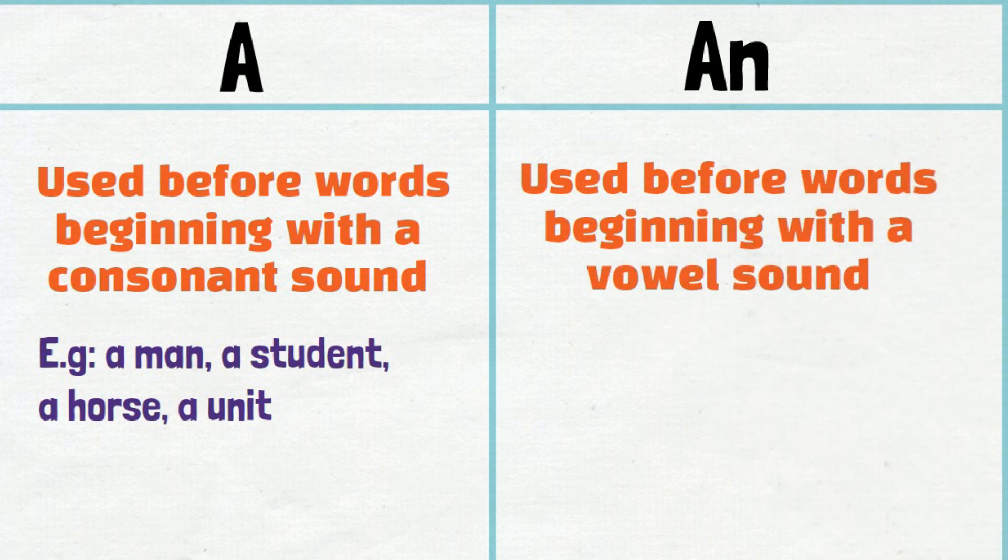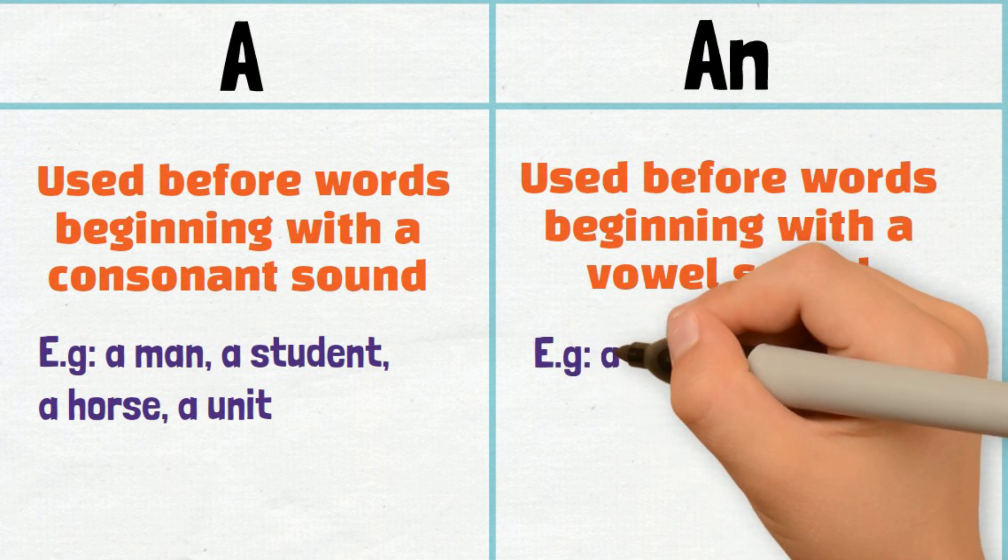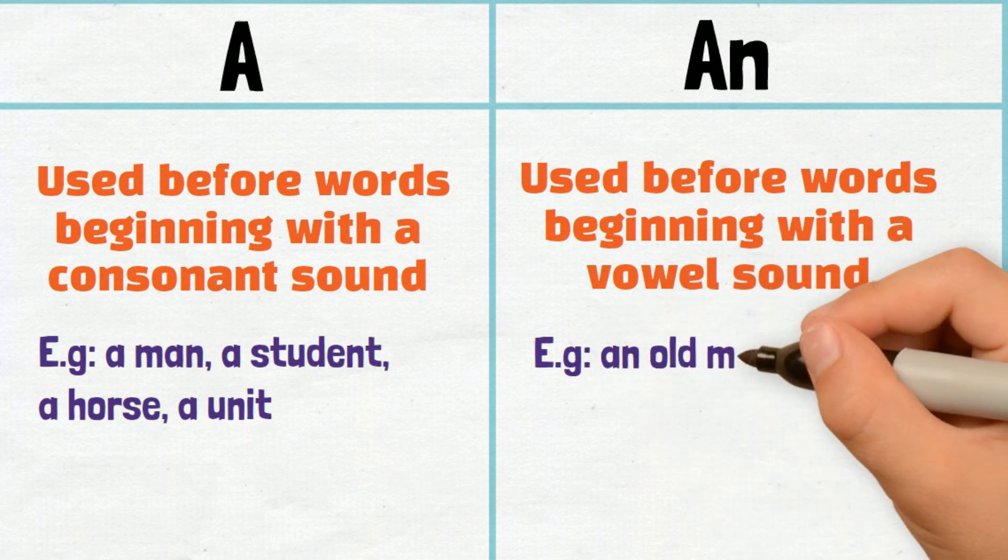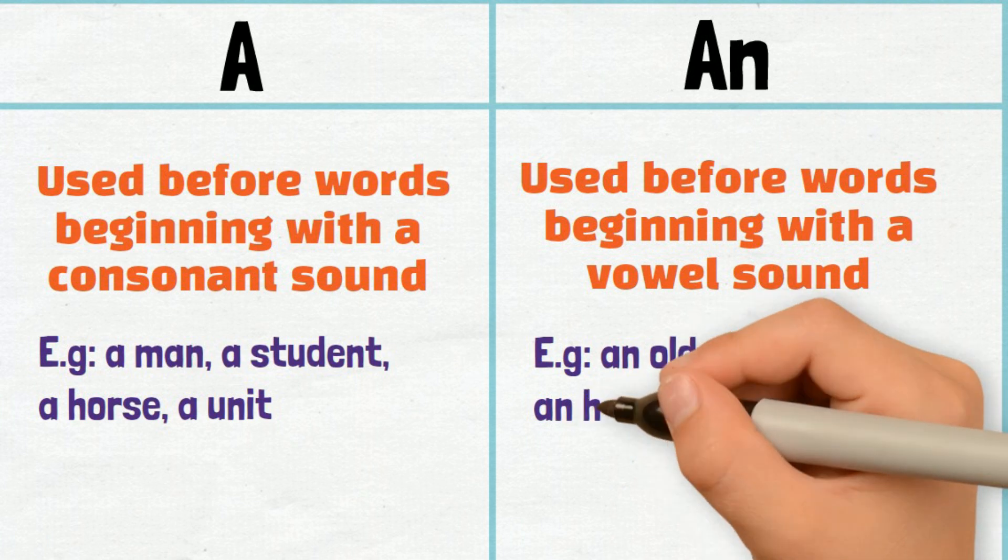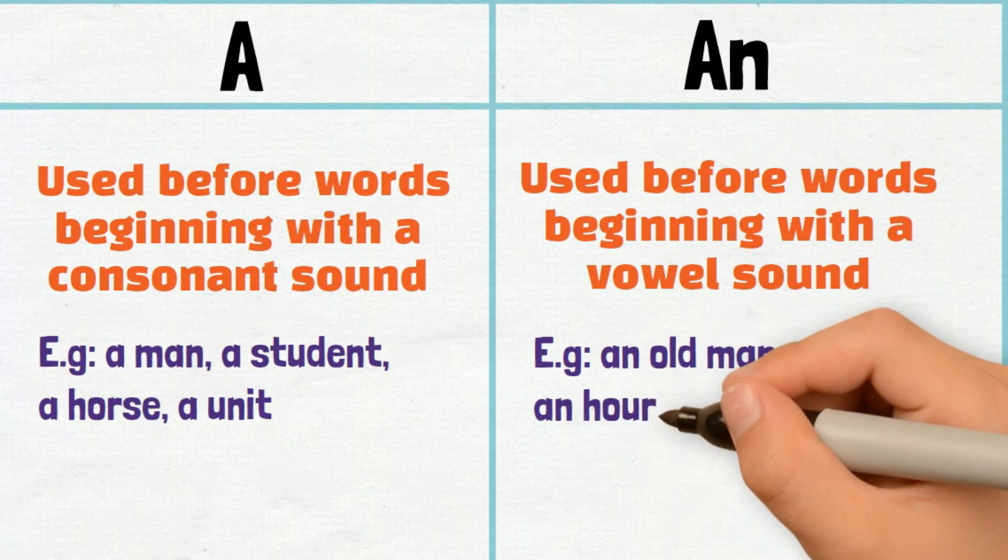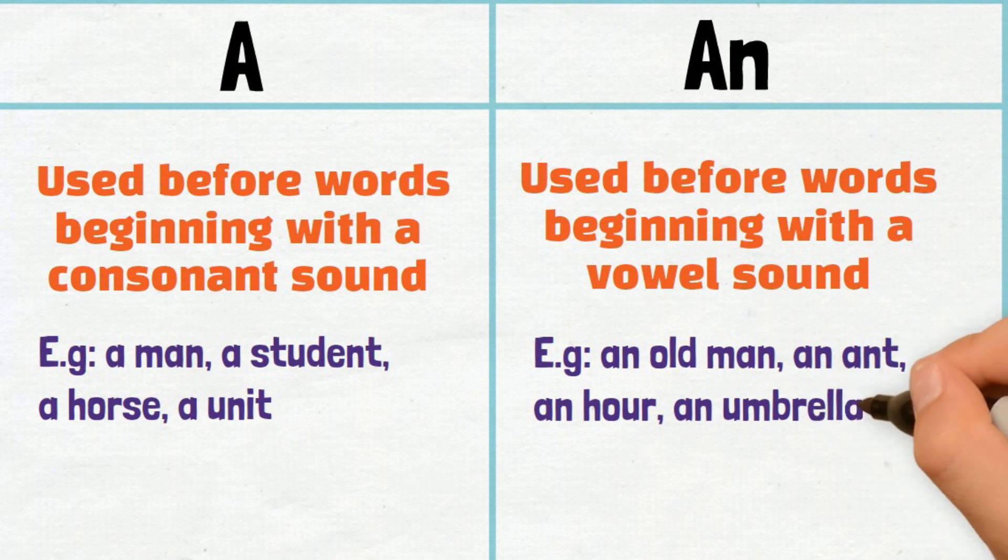An is used before words beginning with a vowel sound. Example: An old man, an ant, an hour, an umbrella.